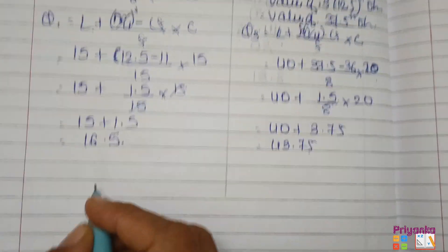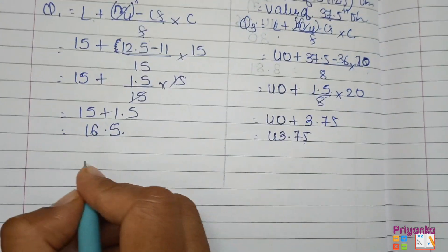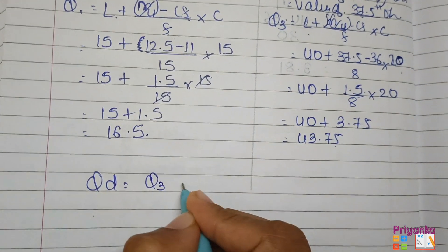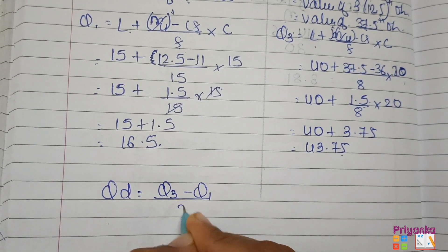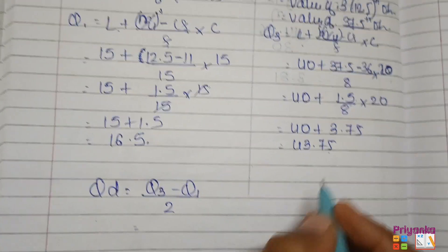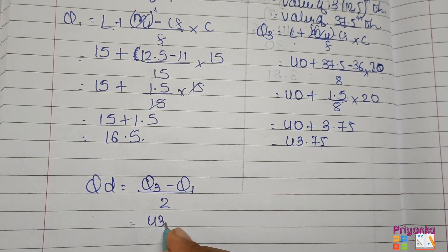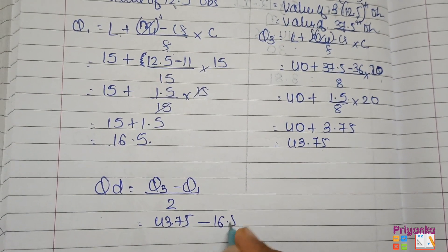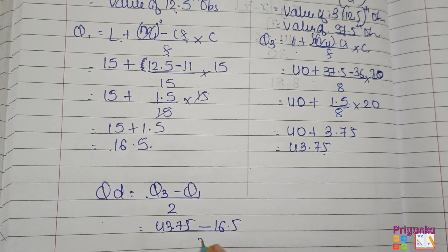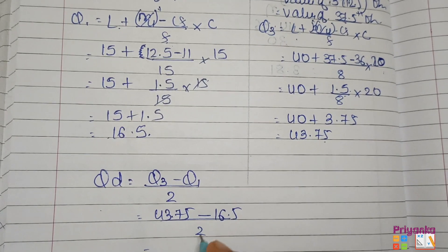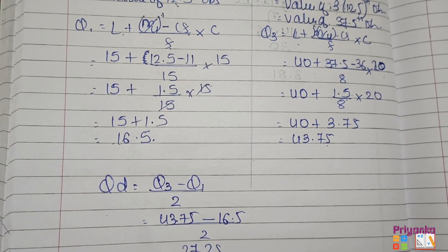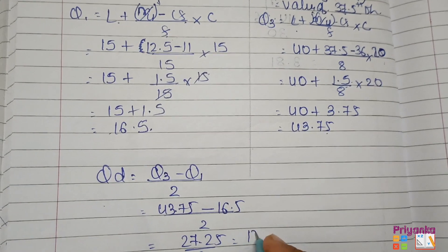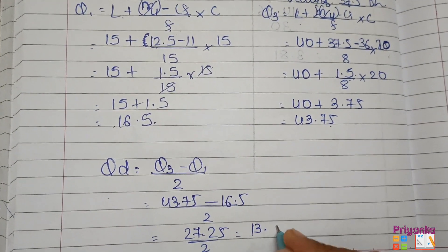Now we have Q1 and Q3. Quartile deviation = (Q3 minus Q1) divided by 2. Q3 is 43.75, Q1 is 16.5. Subtracting: 43.75 minus 16.5 equals 27.25, divided by 2 gives the quartile deviation as 13.63.